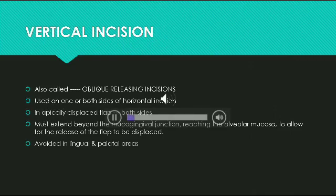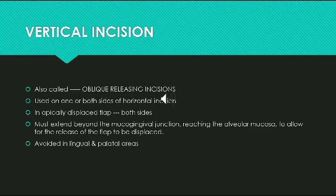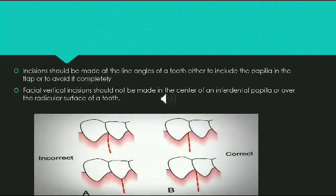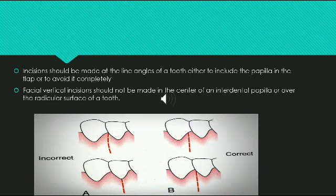The vertical incision is also called the oblique releasing incision. It can be used on one or both ends of the horizontal incision depending on the design and purpose of the flap. It is used at both ends if the flap is to be apically displaced. Vertical incisions must extend beyond the mucogingival line, reaching the alveolar mucosa to allow release of the flap. In general, vertical incisions in the lingual and palatal areas are avoided. Facial vertical incisions should not be made in the center of an interdental papilla or over the radicular surface of a tooth.